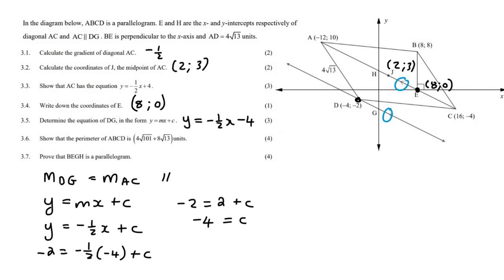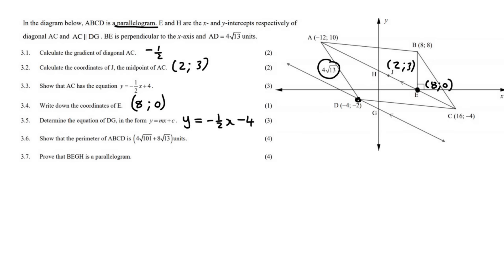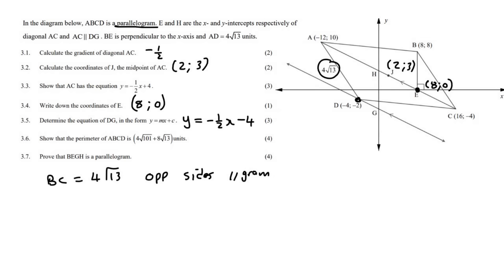Question 3.6: Show that the perimeter of ABCD equals a given value. Remember perimeter is the total distance all the way around the outside. Since it's a parallelogram, opposite sides are equal — if AD is 4 square root 13, then BC is also 4 square root 13. We only need to calculate one of AB or DC. Using the distance formula for AB with points (minus 12, 10) and (8, 8).